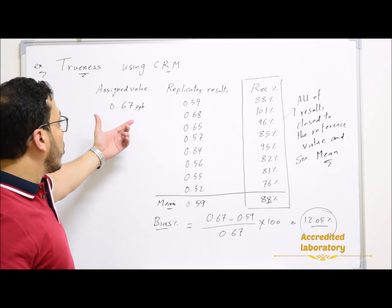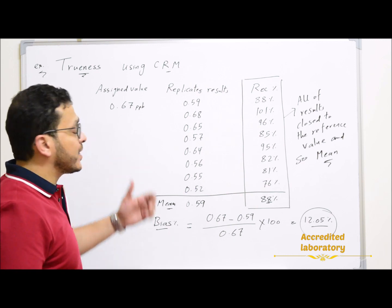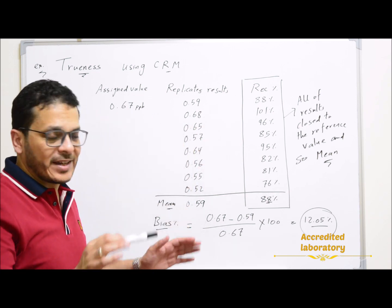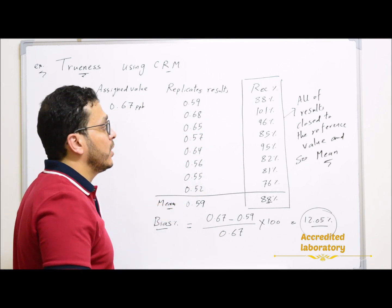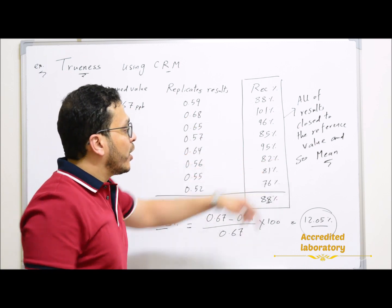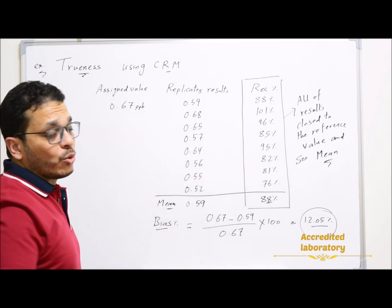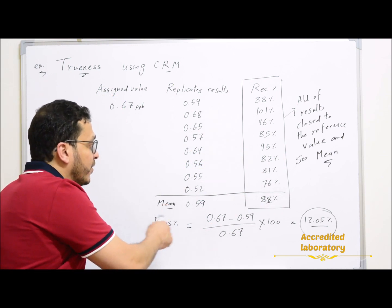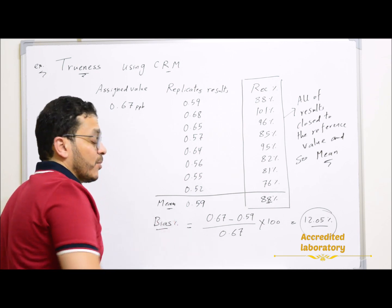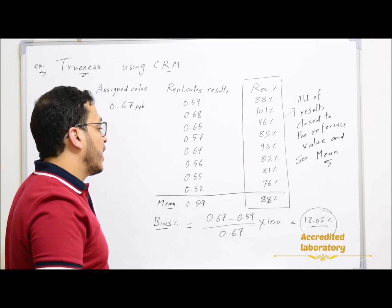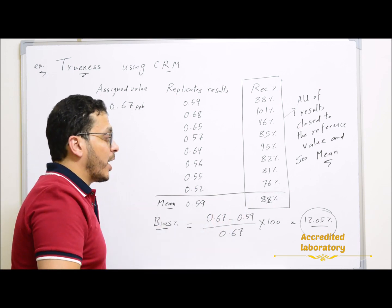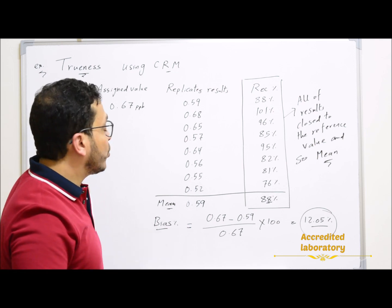A CRM with an assigned value of 0.67 ppb is used and replicates are run. You should verify that the recovery for every individual result falls within an accepted limit — for example, 70% to 120%. All results were found to be close to the reference value, so the mean is also accepted and close to the reference value. The calculated mean of all replicates is 0.59, which is very close to the assigned value. The bias is then: (0.67 − 0.59) ÷ 0.67 × 100. This is how to calculate bias and evaluate trueness using CRM.